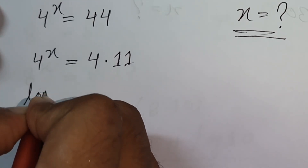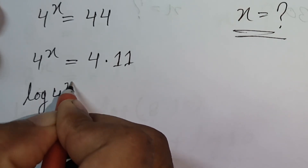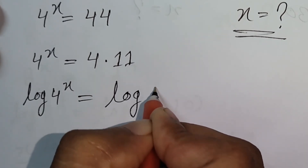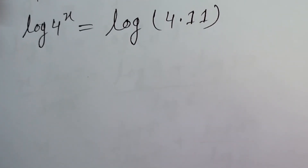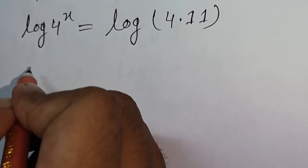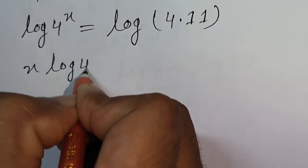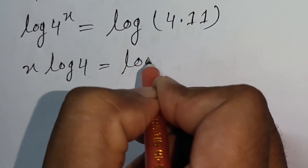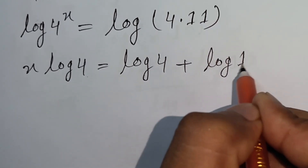Then, log of 4 to the power x is equal to log of 4 times 11. Then x comes to the base: x log 4 is equal to log 4 plus log 11.